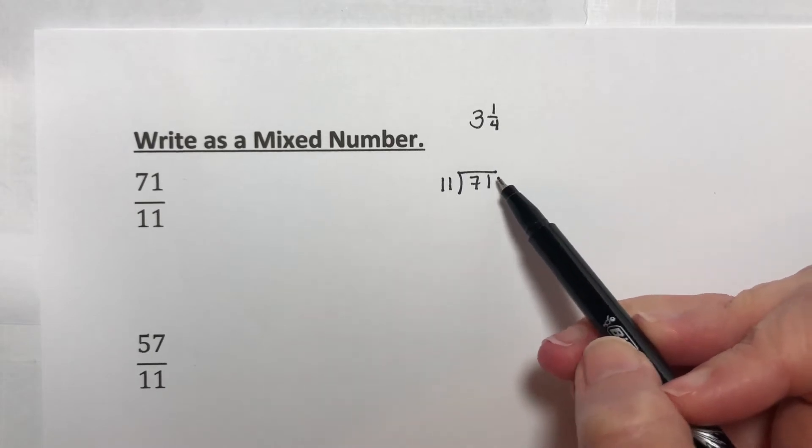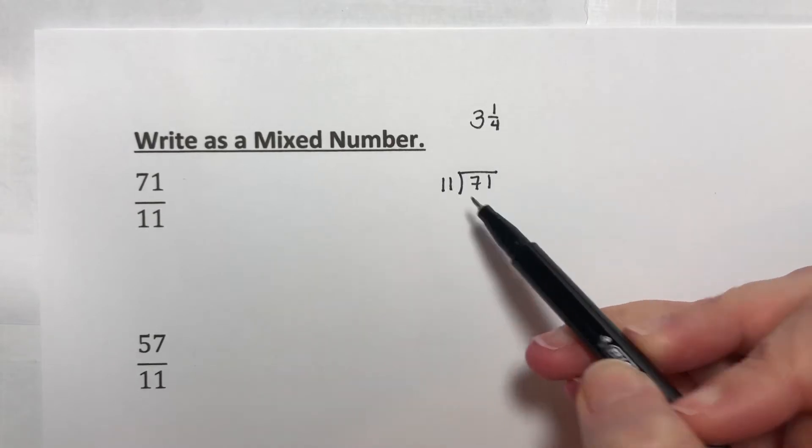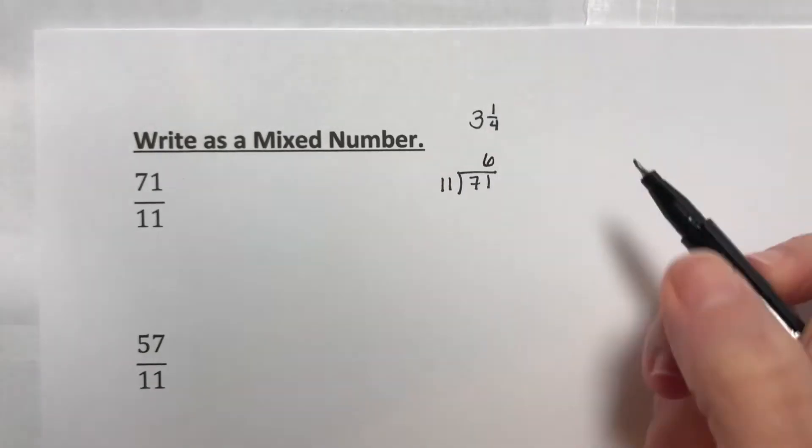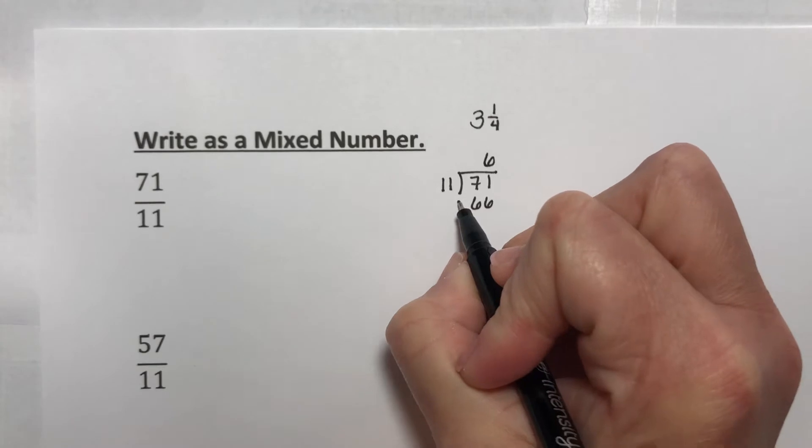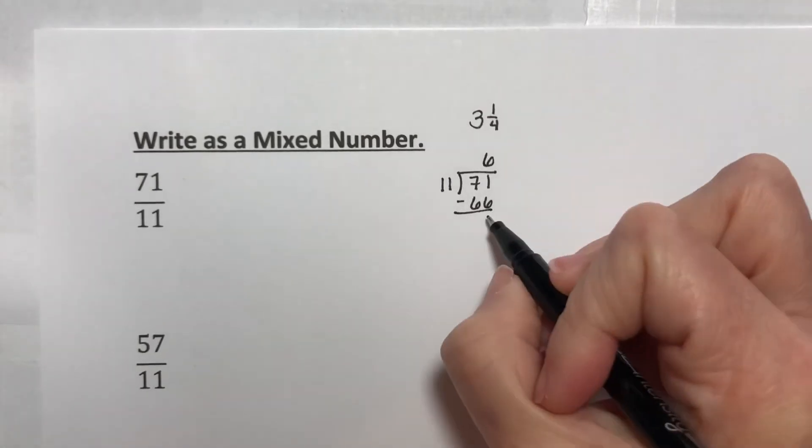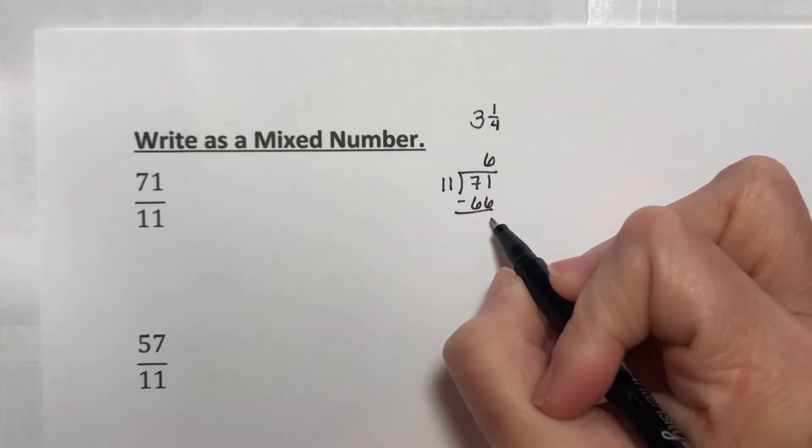It doesn't go seven times because that would be 77, so I'm going to say it goes in six times. Six times 11 would be 66. You do the subtraction, and you get a 5.